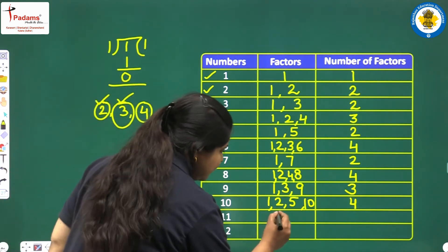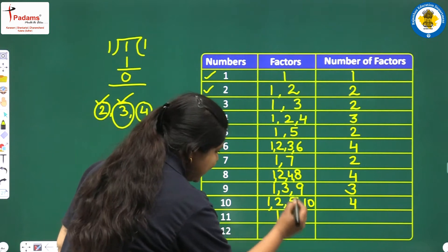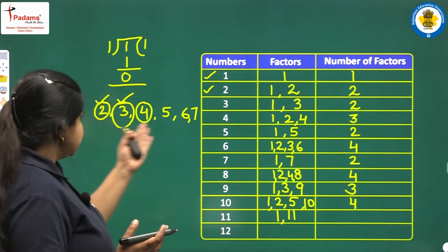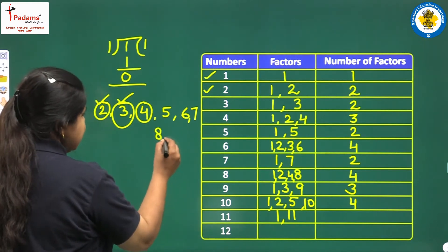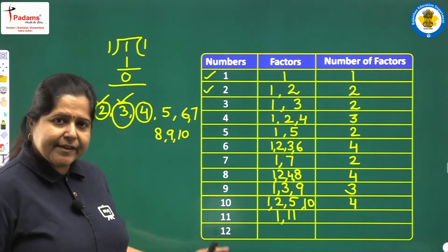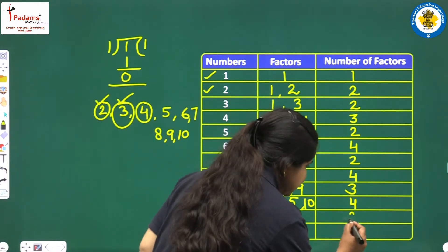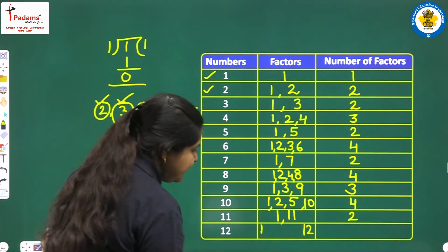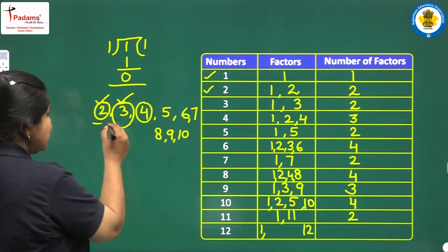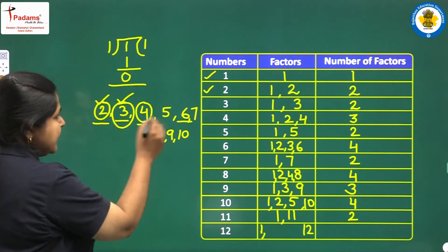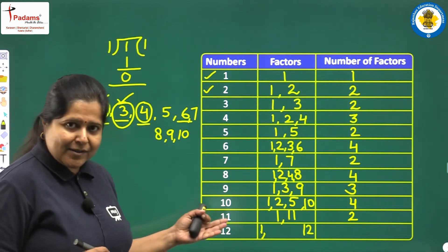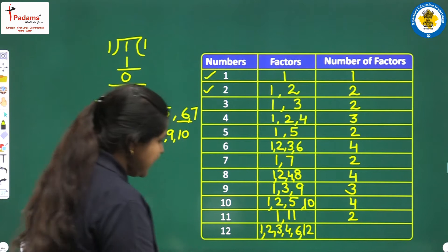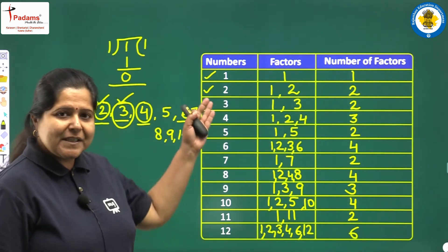Then we have the number 11. 1 will be a factor of 11 and 11 will be a factor of itself. Is there any number's table in which 11 comes? No, no other number will divide 11 completely, so there are only 2 factors of 11. Then we have the number 12. Clearly, 1 will be its factor and 12 will be a factor of itself. In between, 12 comes in the table of 2, 3, 4, and 6, so these 4 numbers will be the factors of 12. In all there are 6 factors of 12. I hope this table is very much clear to you.